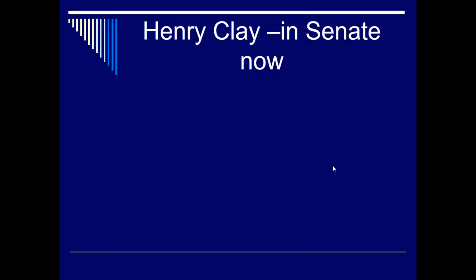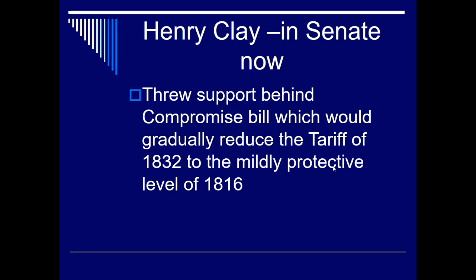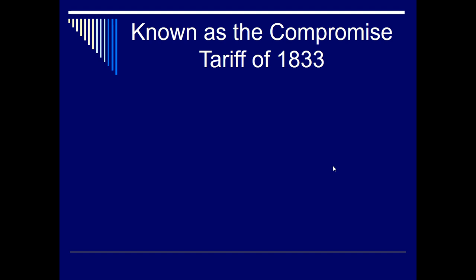Henry Clay is now in the Senate and throws his support toward a compromise bill, which reduces the tariff of 1832 to tolerable levels. To recap the tariff differences: the first tariff of 1828 was 45%, the tariff of 1832 at the heart of the nullification crisis was 35%, and the compromise tariff of 1833 brings it down to 20%. This ends the nullification crisis — at least the threats of secession — though it still causes a rift and growing sectionalism between North and South.